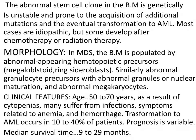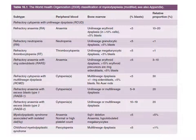Different subtypes of MDS exist. This is the WHO classification of myelodysplasia — it is not necessary to memorize all of this, as it is not given in your book. But you can understand it better. Sub-type of MDS, what we will see in the peripheral blood, what we will see in the bone marrow, how much will be the blast percentage in the bone marrow, and what is the relative proportion of these patients — you can see this WHO classification table.